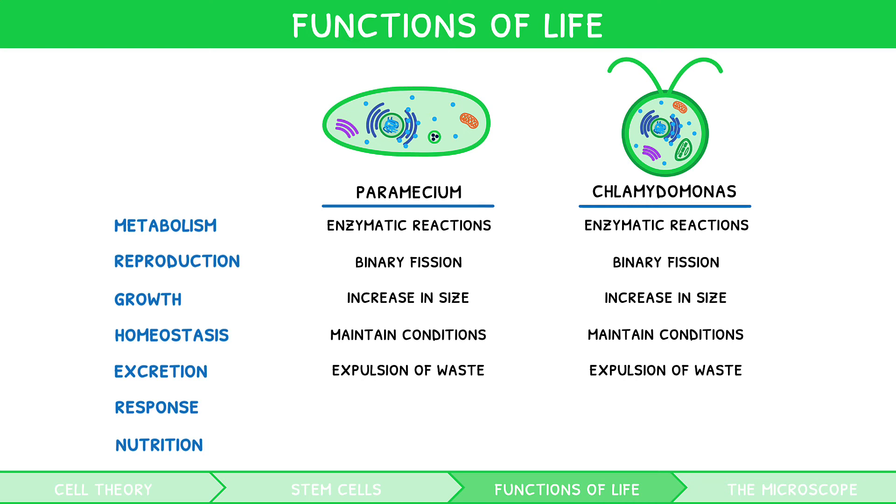However, for response, paramecium reacts to solids, whereas chlamydomonas responds to light. Then, for nutrition, paramecium obtains nutrients via endocytosis, whereas chlamydomonas obtains nutrients via photosynthesis. Ensure you can give a description of how each of these two organisms fulfill their functions of life. It comes up a lot.